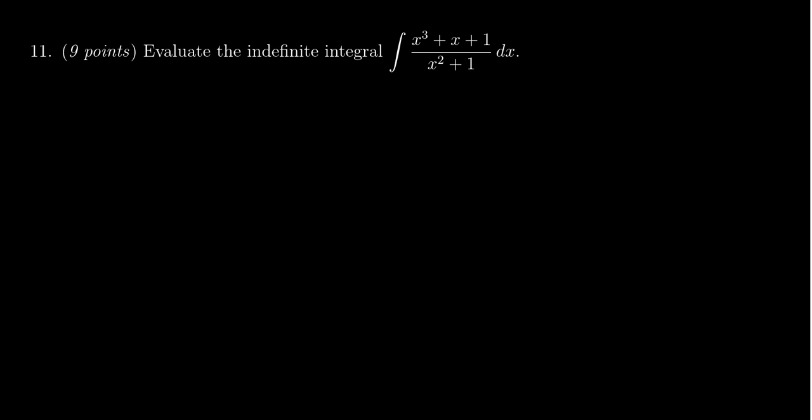So the first thing I notice here is that we have an improper fraction. We have an x cubed over x squared, and so as such, we're going to want to do some polynomial division. We could try to weasel our way around a couple things. One of the most straightforward things is just to do long division.